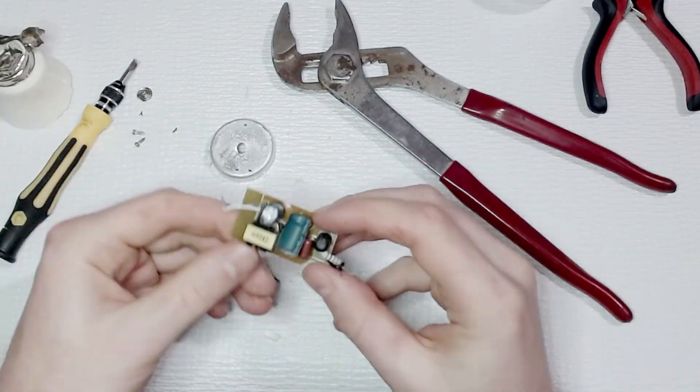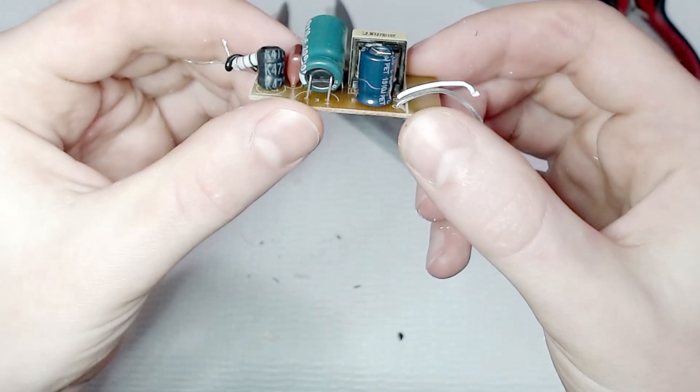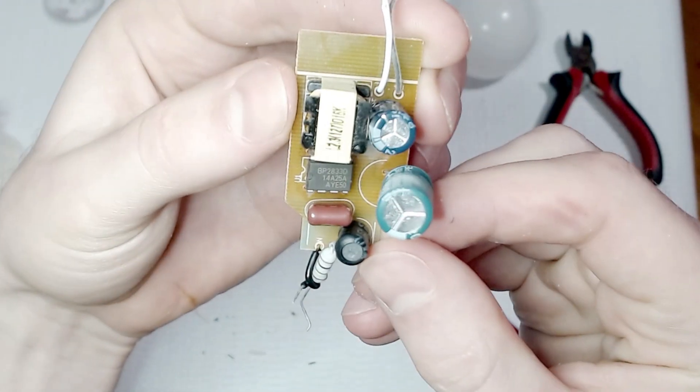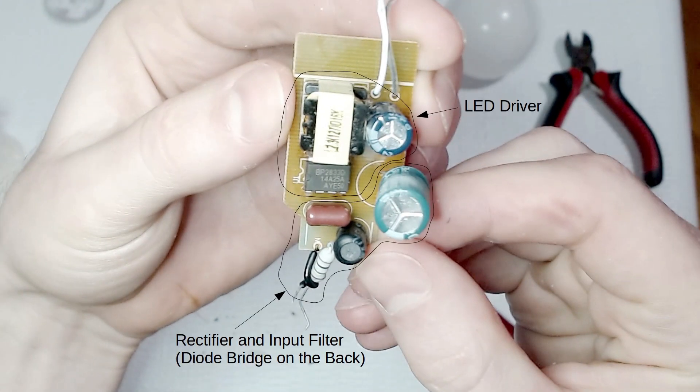Now we have the LED driver circuit PCB extracted from the LED light bulb. For this particular LED light bulb we have a rectifier and input filter circuit and an LED driver circuit. The LED driver circuit consists of a BP2833D non-isolated LED driver.